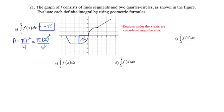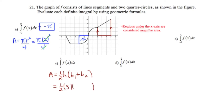Part C asks for the area under the curve from 2 to 5. The region is bound by the x-axis and forms a trapezoid. Using the trapezoid formula — area equals one-half times height times the sum of the bases — the height is 3 units, the shorter base is 2 units, and the longer base is 4 units. This gives one-half of 3 times 6, which is 9. Since this area is above the x-axis, the answer is positive 9.